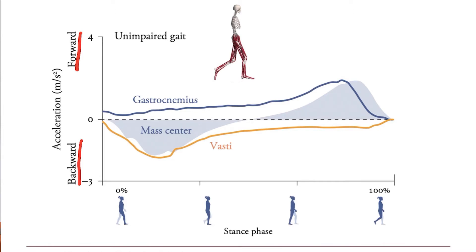In typical unimpaired gait, you see the vasti, they're providing body weight support, but they're also producing this backward directed acceleration. Later in stance, remember gastroc comes on, its excitation comes on, it's generating force, and it produces a forward generated acceleration.